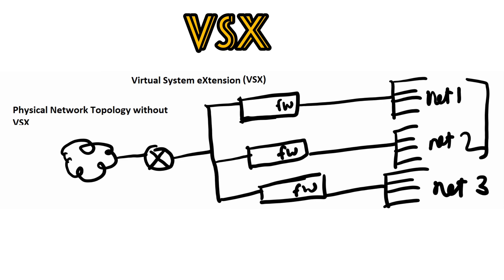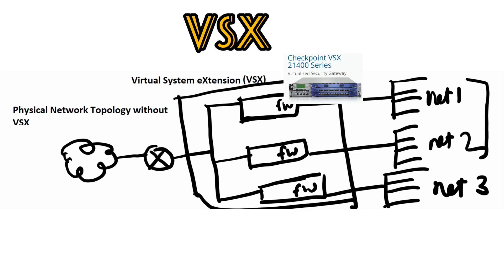But if you consider the VSX option, these three firewalling functionalities will be delivered within one VSX gateway. So this one VSX gateway contains these three different virtual firewalls, and using only one hardware, configuring only one hardware, and setting up only one hardware, you will be doing the same work that would require multiple physical firewalls in the topology without VSX. This is the benefit we get from the VSX feature of checkpoint firewall.